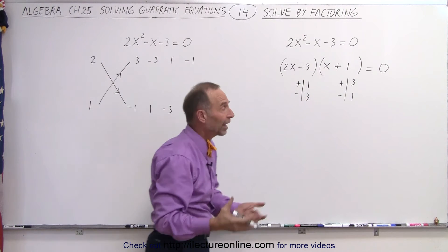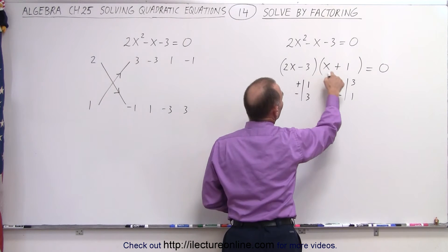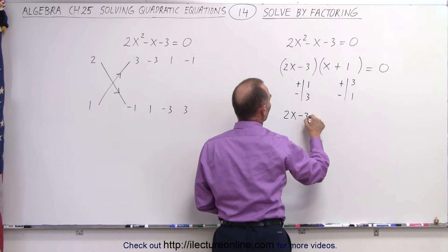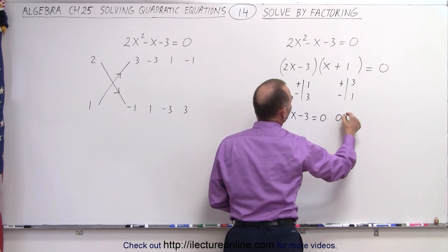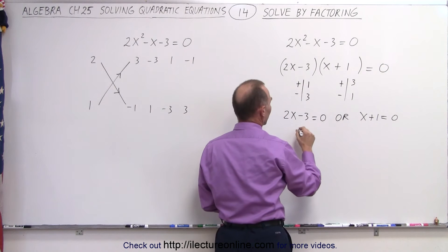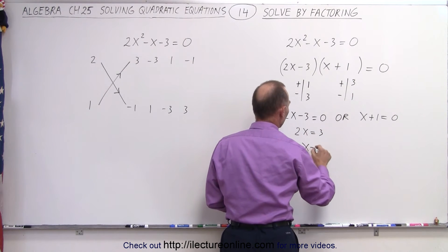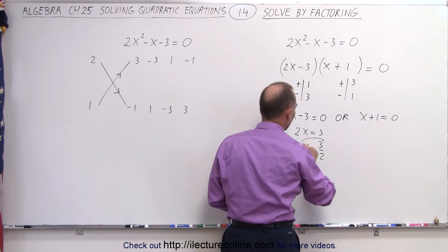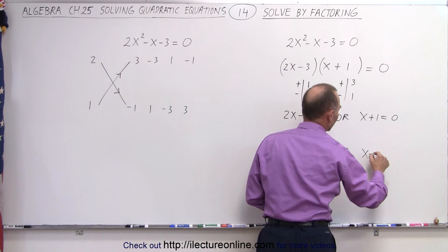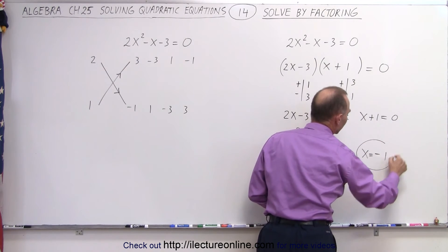So that looks like that's the correct way of factoring that. So since we have two binomials that equal 0, this means that either 2x minus 3 equals 0, or x plus 1 equals 0. On the left side we can say that 2x is equal to 3, or x equals 3 over 2 as being one solution. Or on the other side we can say x equals negative 1 as the other solution.